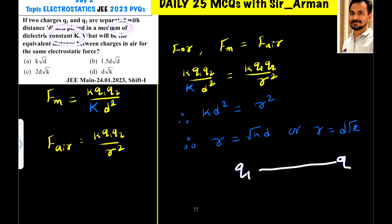So, if you have charge Q1, charge Q2, they are in a medium of dielectric constant k and separated by distance d.